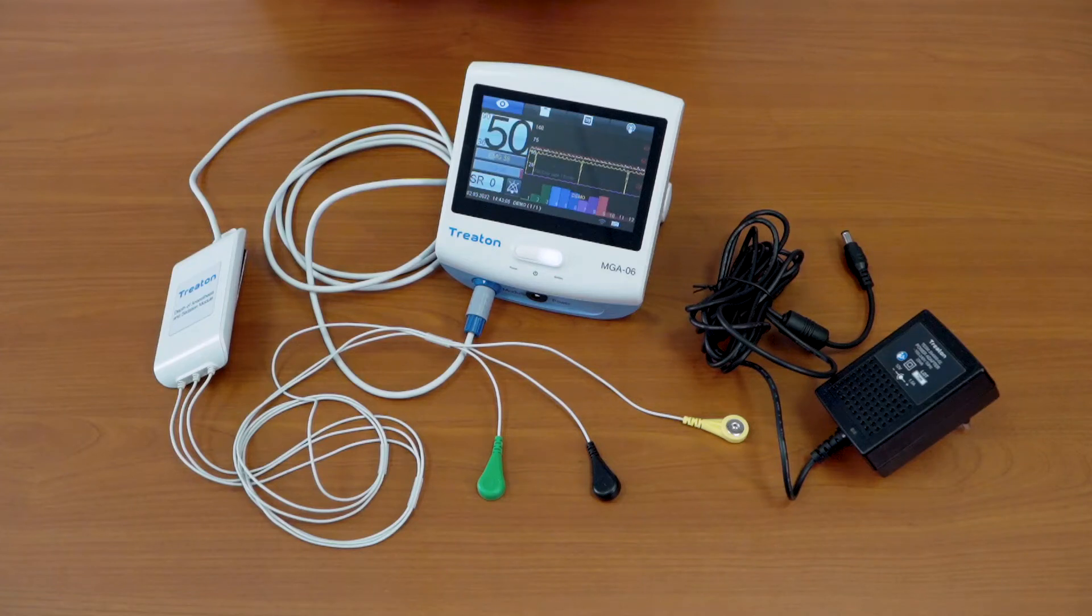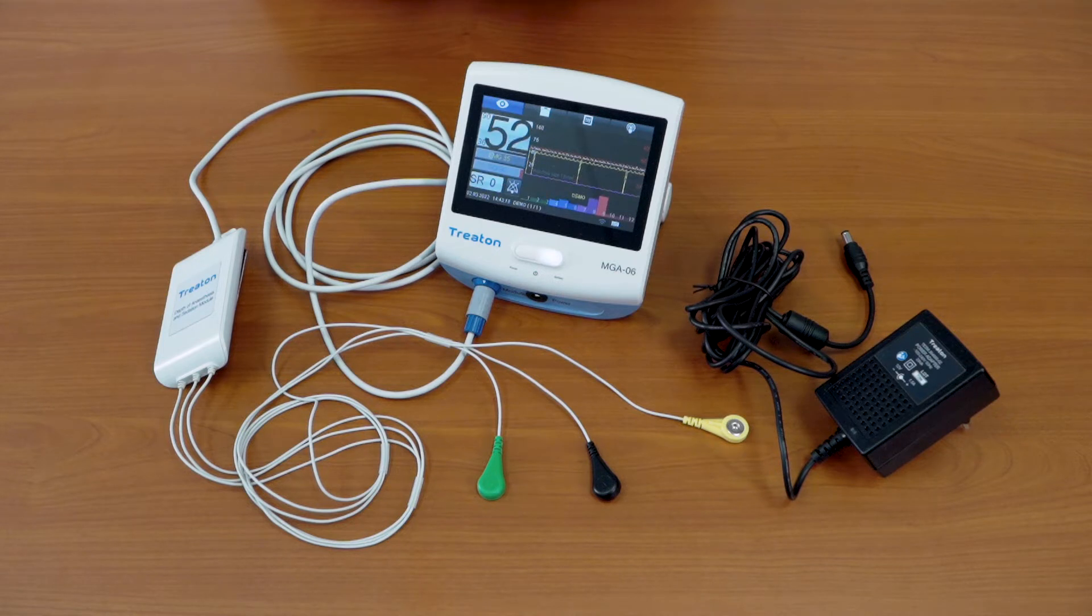The device is intended for evaluation of the brain activity. There are several world analogies: bispectral index monitors and entropy monitors. MGA06 estimates the electroencephalogram and processes EEG signal to calculate the level of the cerebral cortex depression.